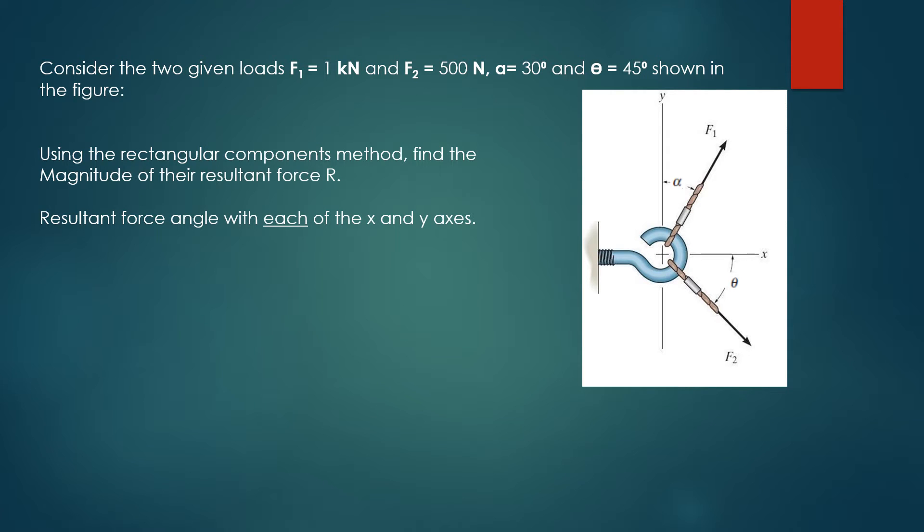We want to determine the resulting force in the shown system caused by two cables under tensile loads F1 and F2. F1 acts at angle alpha equals 30 degrees with regard to the y-axis, and F2 acts at angle theta equals 45 degrees with regard to the y-axis. We're going to find the magnitude of the resultant force R using the rectangular components method.